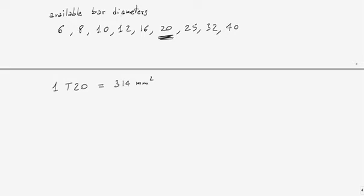The number of bars I need equals the total area required, 1168, divided by 314, which is 3.7. Rounding this up, I need at least 4 bars to reinforce my cross-section.